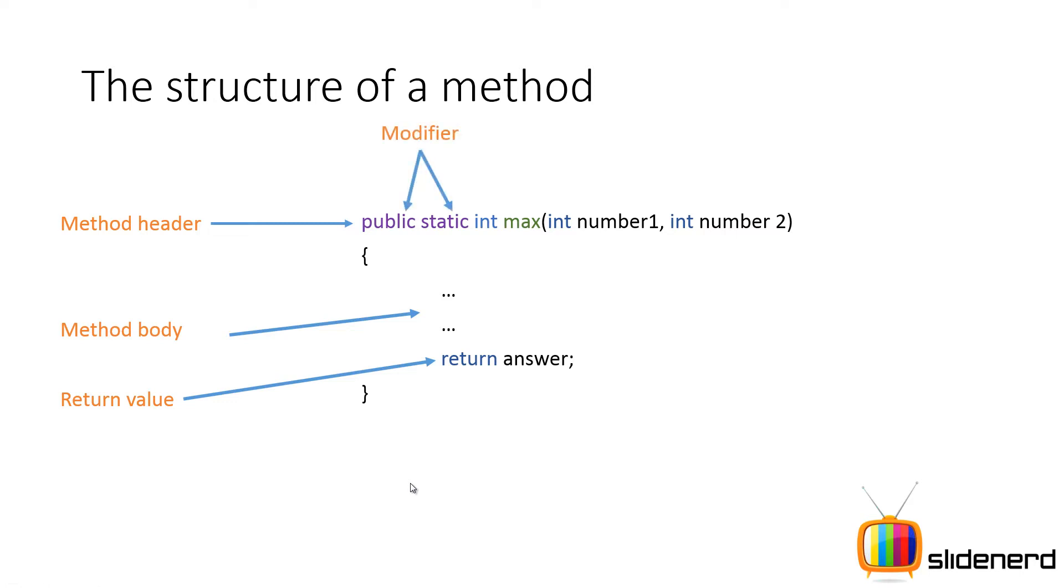Then if you take a look at public and static, such keywords are called modifiers in Java. Now if you guys are not sure about what they do, don't worry. We will be discussing modifiers in a lot more detail in the upcoming videos, but for now let's just stick with those words and try to get them in our way.